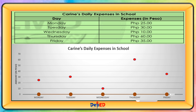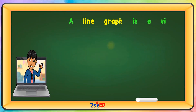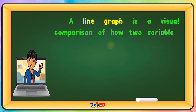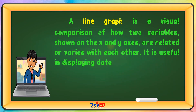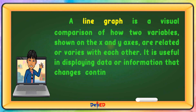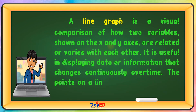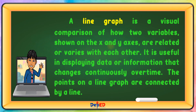Let us connect the points using the line. A line graph is a visual comparison of how two variables shown on the x-axis and y-axis are related or vary with each other. It is useful in displaying data or information that changes continuously over time. The points on a line graph are connected by a line.